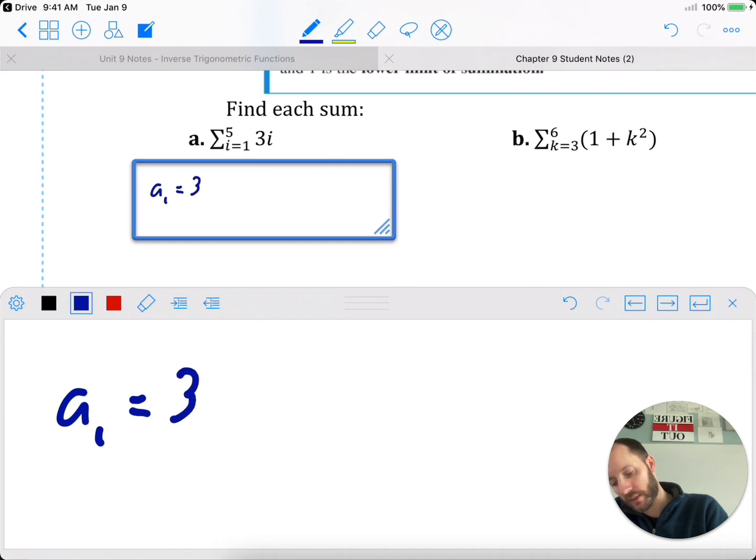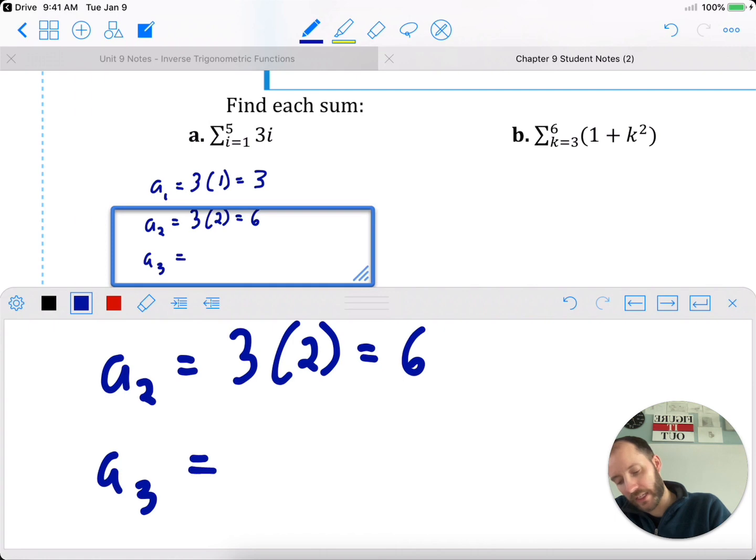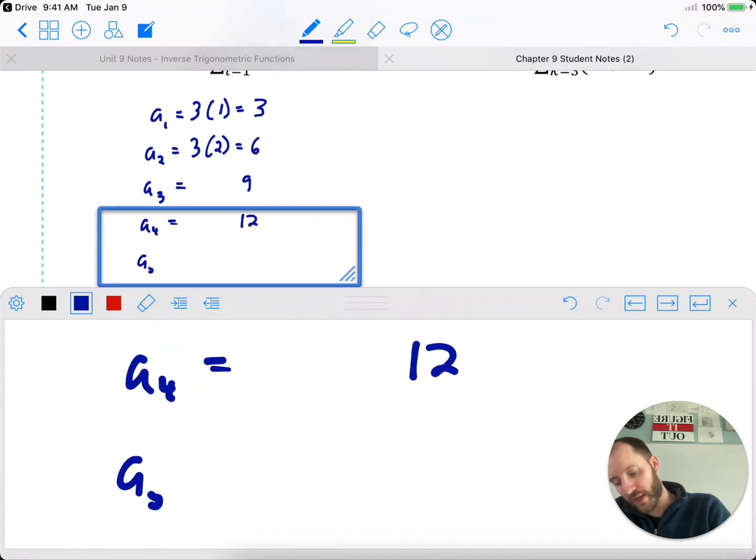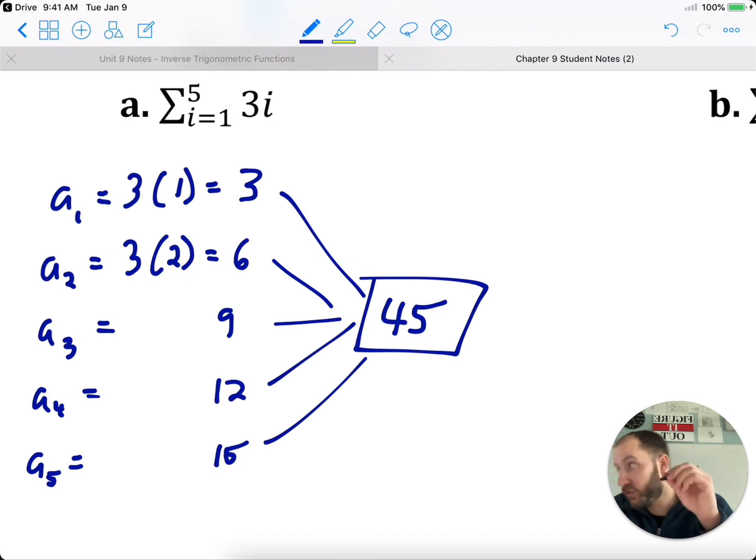In this case, example a from the 1st to the 5th, and then summation, the Greek sigma, adding all of those terms up. A sub 1 is 3 times 1, which is 3. A sub 2, 3 times 2, which is 6. A sub 3 is 9. A sub 4 is 12. A sub 5 is 15. And then we're going to add all of those together: 3, 6, 9, 12, and 15. 15 and 12 is 27, 9 is 36, 6 is 42, and 3 more is 45. I can do basic math.